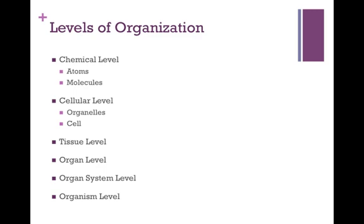At the chemical level, it starts out with atoms. An atom is the simplest stable unit of matter. The organism is the most complex level that we have. You should also know that cells at the cellular level are the smallest living unit.